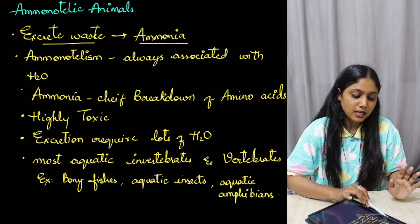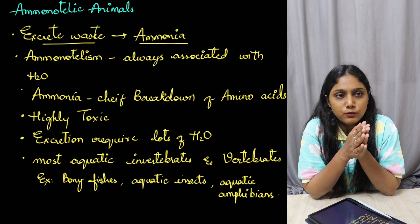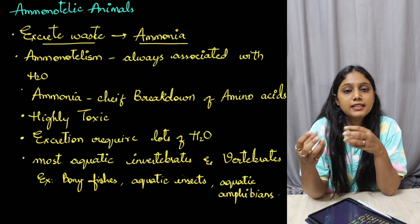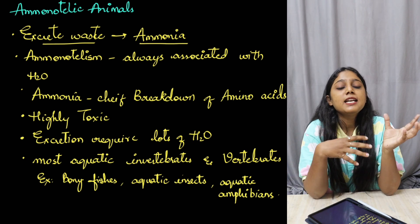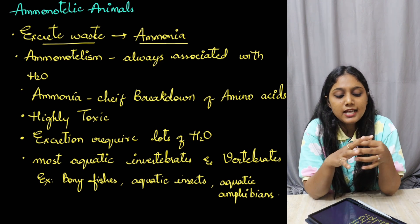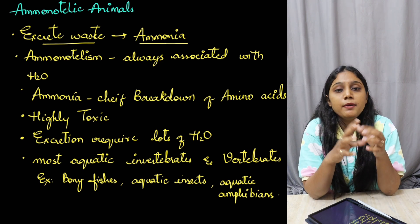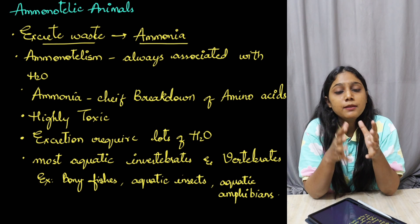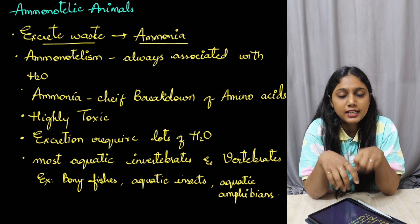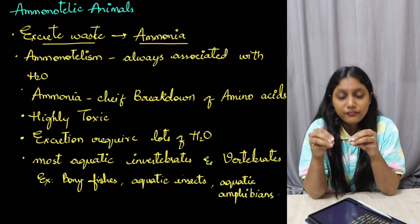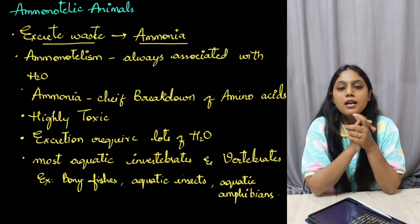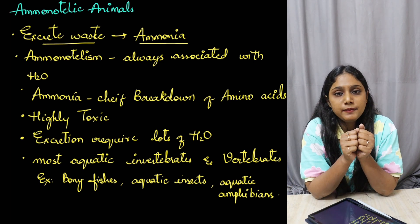Ammonotelic animals are those which excrete their primary nitrogenous waste in the form of ammonia, and hence they are called ammonotelic animals. Ammonia in the body is chiefly produced from the breakdown of amino acids. Looking at the amino acid breakdown, ammonia is chiefly produced from that process.